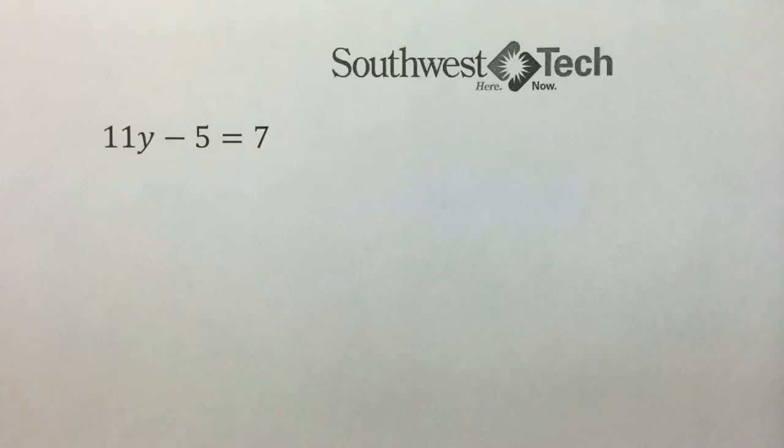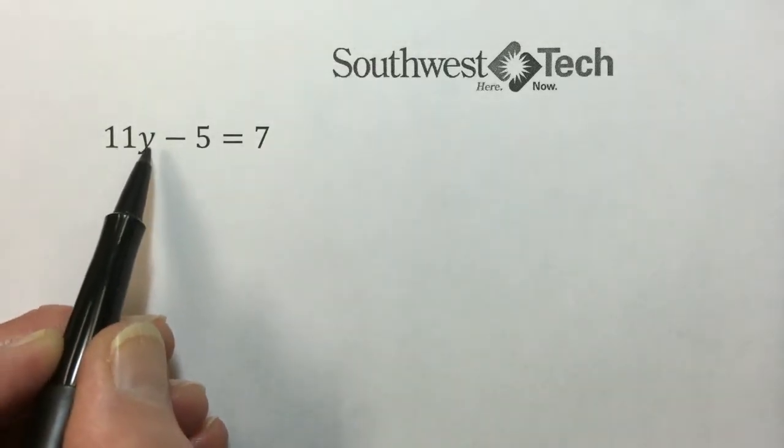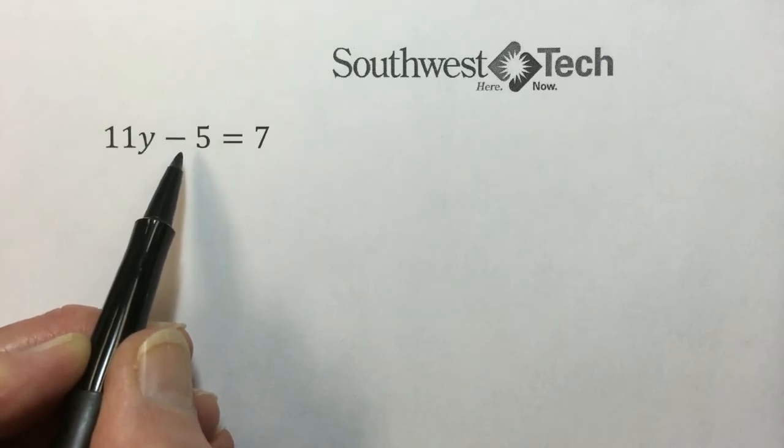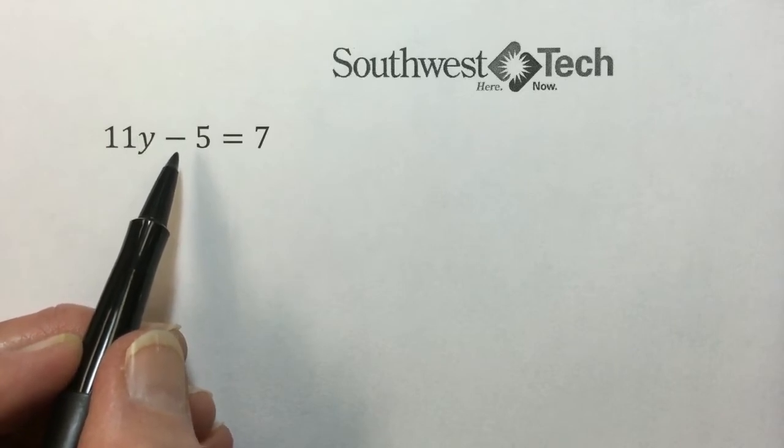If we were going to evaluate this expression, we would do multiplication first and then subtraction. Since subtraction was the last thing priority, following the order of operations, that's the first thing that we will undo.